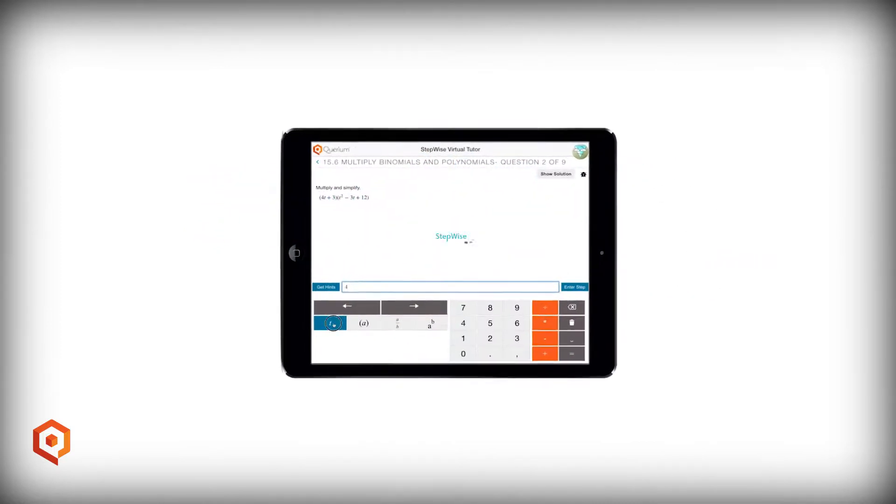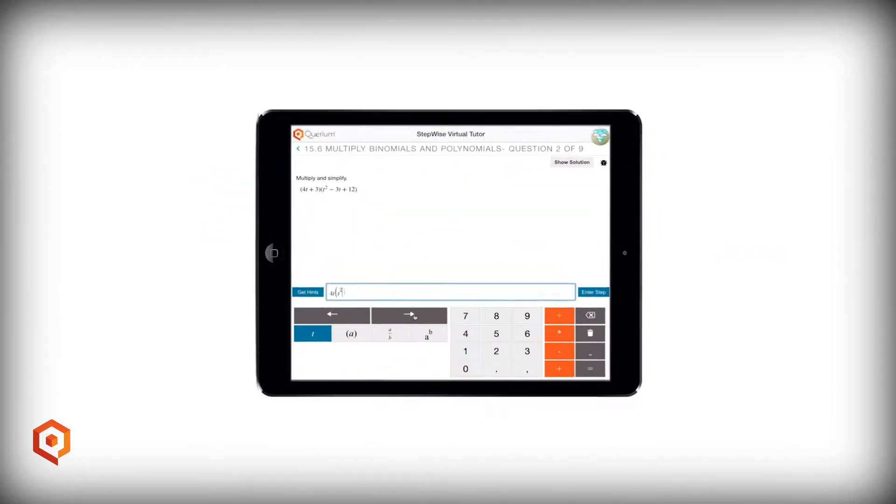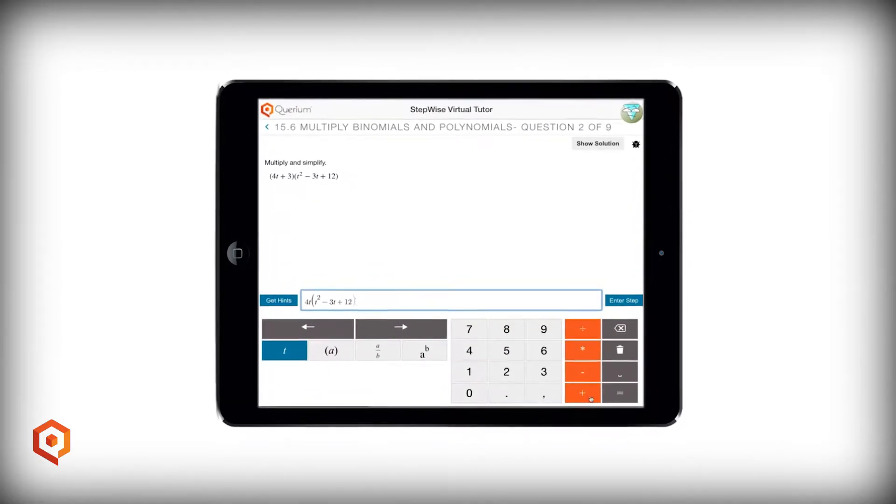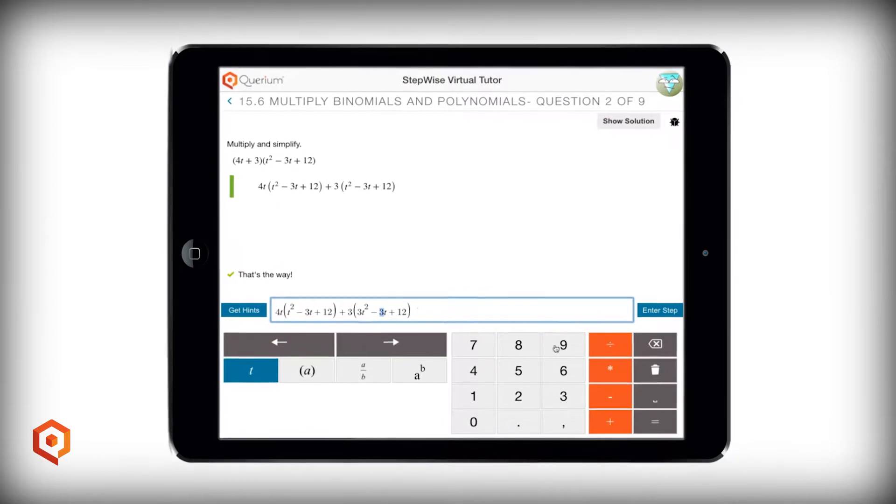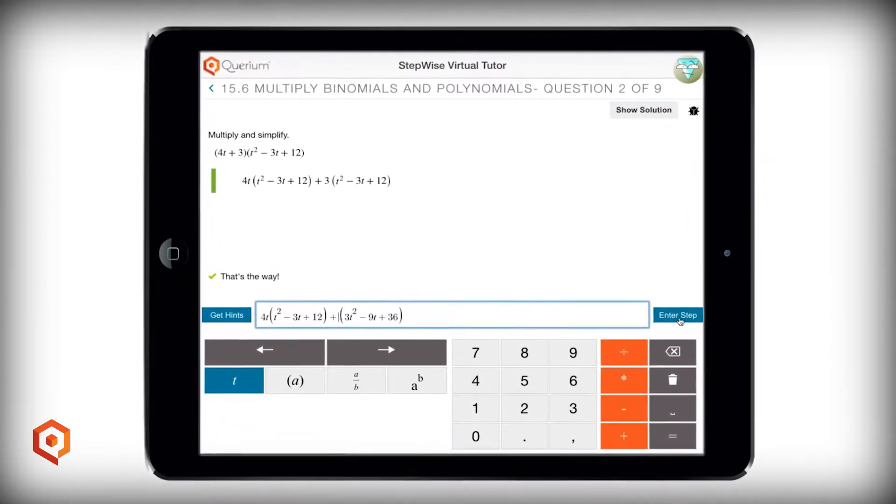Stepwise is an artificial intelligence-based virtual tutor that helps teens and adult learners learn mathematics on mobile devices and laptops. Students solve problems by submitting each step for evaluation and receiving immediate feedback.